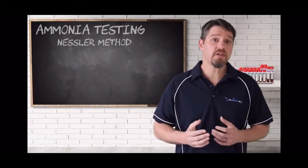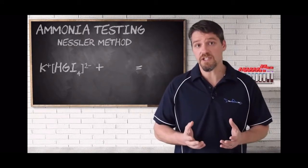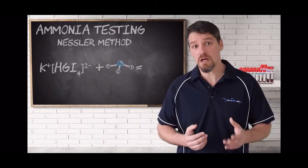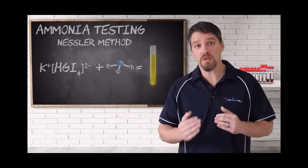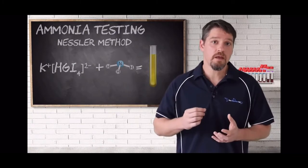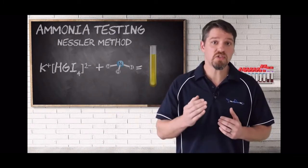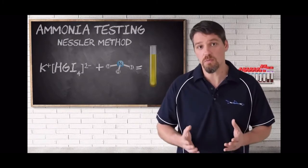The Nestler method uses a reagent conveniently called the Nestler reagent, and it binds with the ammonia present in the water to produce a yellow color, and the intensity will darken with the higher concentration of ammonia that might be there. The color reference card supplied with your test kit is then used to determine the concentration of total ammonia that's present.